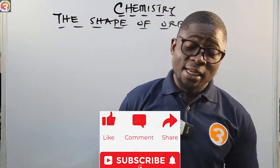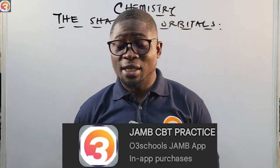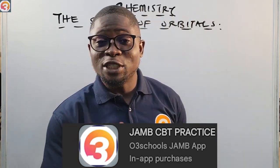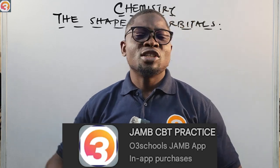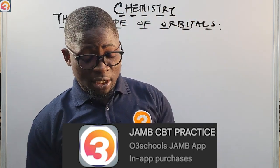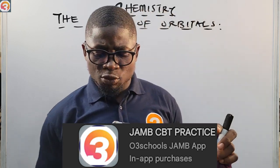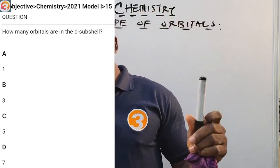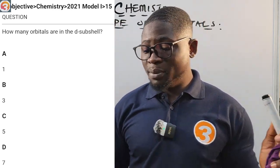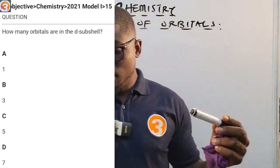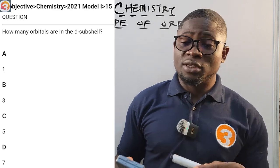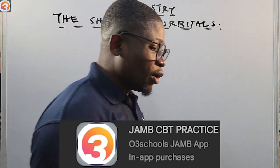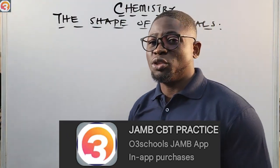This tutorial is sponsored by the All3Schools JAMB CBT Practice App. For a JAMB CBT exam, you need a good practice app, and that's where the All3Schools JAMB app comes in. It is stuffed with all you need to succeed in your exam. Here is a 2021 question number 15 concerning the shape of orbitals: how many orbitals are in the D sub-shell? A: 1, B: 3, C: 5, D: 7. Go and download this application so that you can perform optimally in your exam.